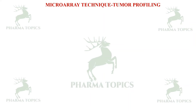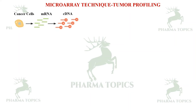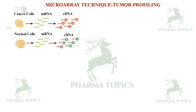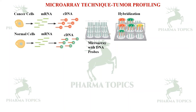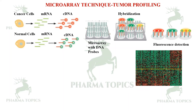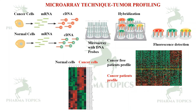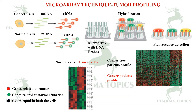Microarray is very useful for tumor profiling. A cancerous cell cDNA and a normal cell cDNA are both hybridized on a microarray DNA plate containing probes. The resulting fluorescence pattern reveals gene expression differences: red indicates genes related to cancer, green indicates genes related to normal function, and black indicates genes expressed equally in both cell types. This makes microarray a very useful technique in tumor profiling.